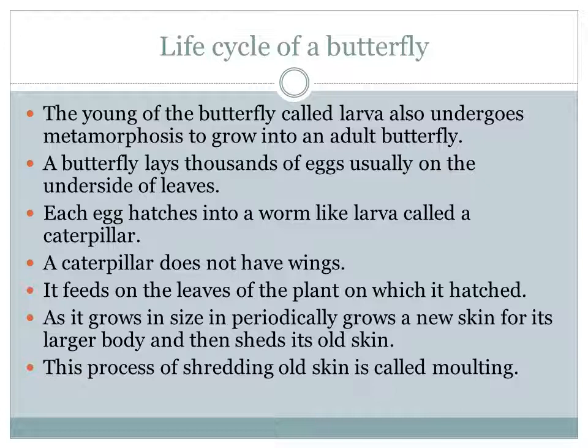The butterfly undergoes serious changes, so there are four stages. Let us see one by one. The egg of the butterfly — it is called larva. It undergoes metamorphosis to grow into an adult butterfly. First, what the butterfly will do: the butterfly lays thousands of eggs, usually on the underside of the leaves.